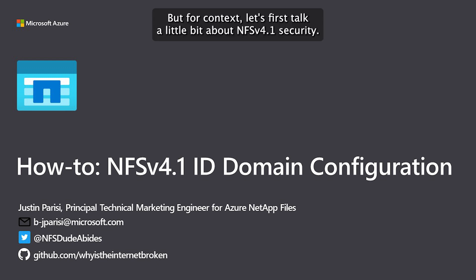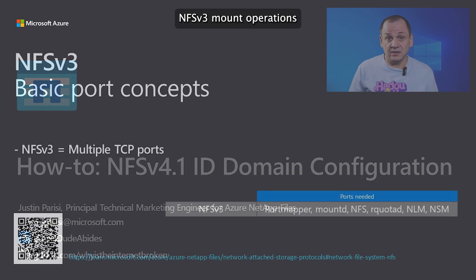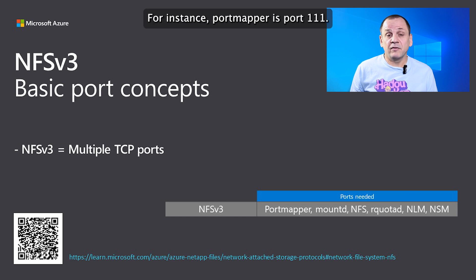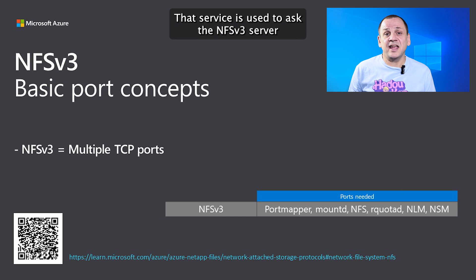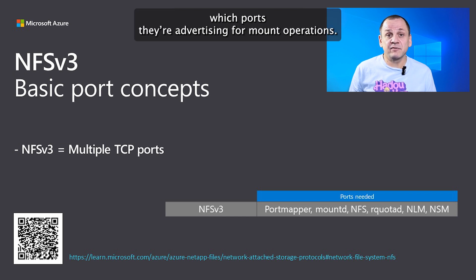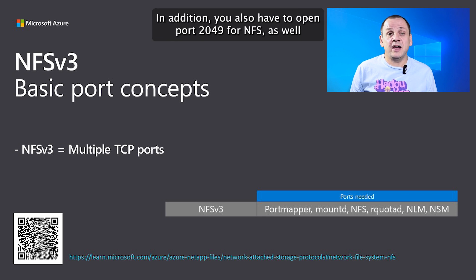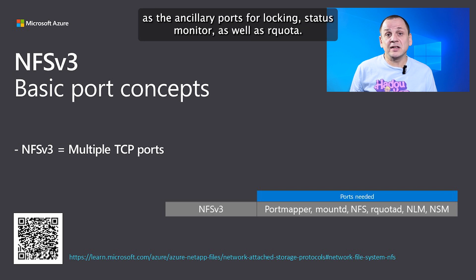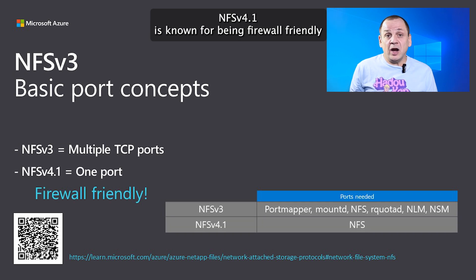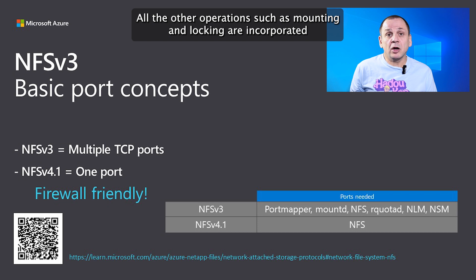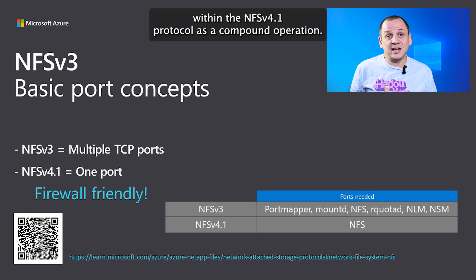For context, let's talk about NFSv4.1 security, starting with how NFSv3 has historically worked. NFSv3 mount operations require multiple TCP ports to be opened — PortMapper on port 111, the mount port, port 2049 for NFS, and ancillary ports for locking, status monitors, and quota. NFSv4.1 is firewall friendly because all you have to do is open port 2049. Operations like mounting and locking are incorporated within NFSv4.1 as compound operations.